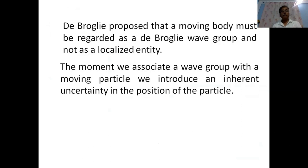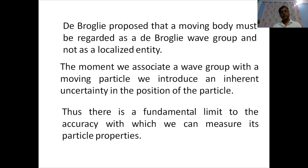Let us start with the uncertainty principle. To begin with, de Broglie proposed that a moving body must be regarded as a de Broglie wave group and not as a localized entity. It means the moment we associate a wave group with a moving particle, we introduce an inherent uncertainty in the position of the particle. Thus, there is a fundamental limit to the accuracy with which we can measure its particle properties.